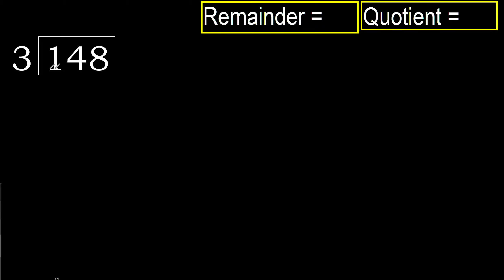148 divided by 3. 1 is less, therefore next. 14 is not less, therefore with 14. 3 multiplied by which number is nearest to 14, but not greater.